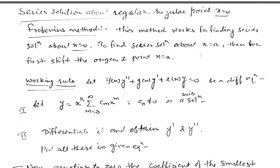Hello students. Now we go through the second approach to find series solution when the given point is not an ordinary point, even a regular singular point. Here we take the regular singular point as a special point, which is x equals 0. In that case we go through a method which is known as the Frobenius method. It gives us a series solution about x equals 0, which is a regular singular point. In the case when we have other than 0, suppose x equals a, in that case first we shift origin to the point x equals a, and after that we can apply Frobenius method.